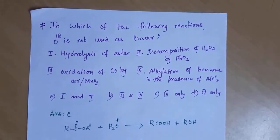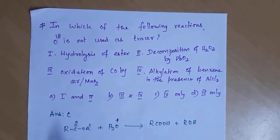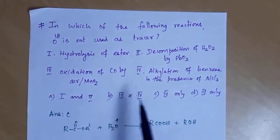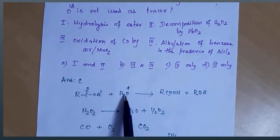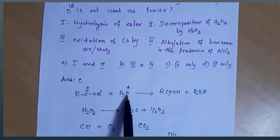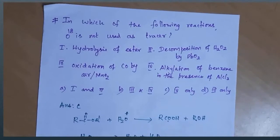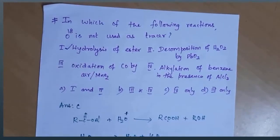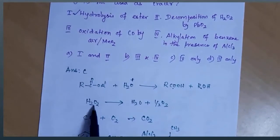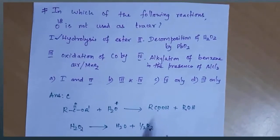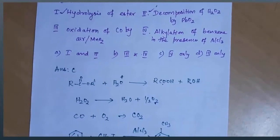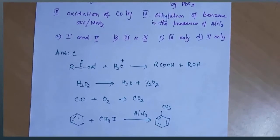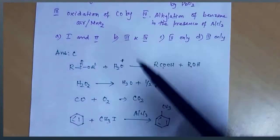Next question: in which of the following reactions is oxygen-18 not used as a tracer? The hydrolysis of an ester involves a water molecule and the oxygen-18 tracer can be used. The decomposition of hydrogen peroxide also involves oxygen, so it can be used. Oxidation of carbon monoxide into carbon dioxide using MnO₂ — here also oxygen can be used. So option 3 is correct for oxygen tracer use.